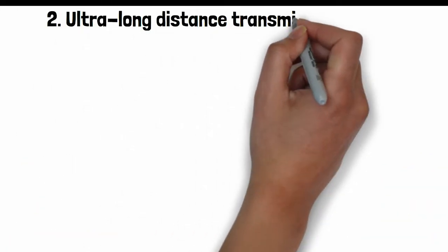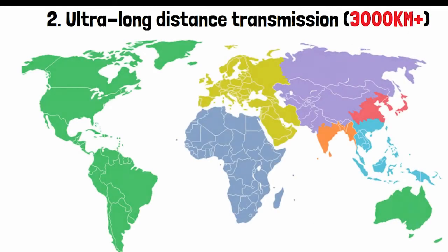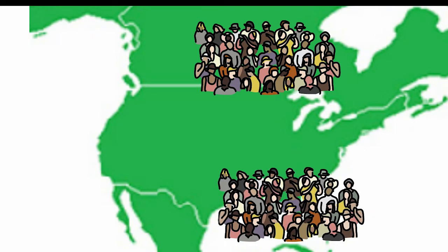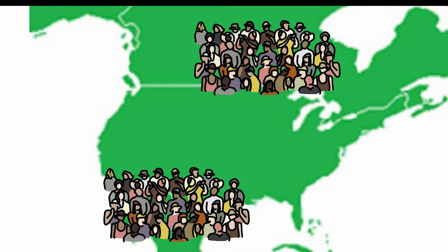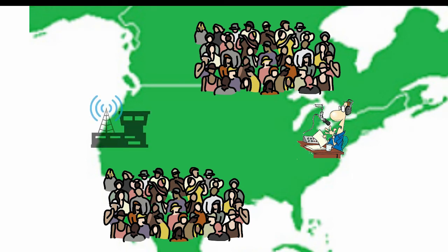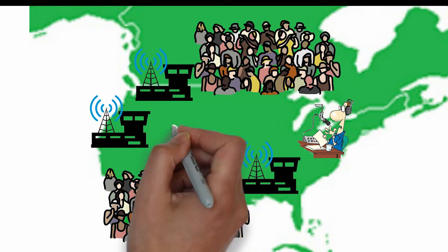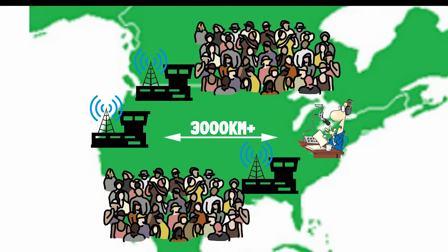Besides, the FM User STL system adopts the latest generation of server audio transmission technology, which enables the coverage signal transmitted by a radio station to no longer be affected by distance. You can set up a radio station at any time in a densely populated area on the edge of the country, and distance is no longer a stumbling block.